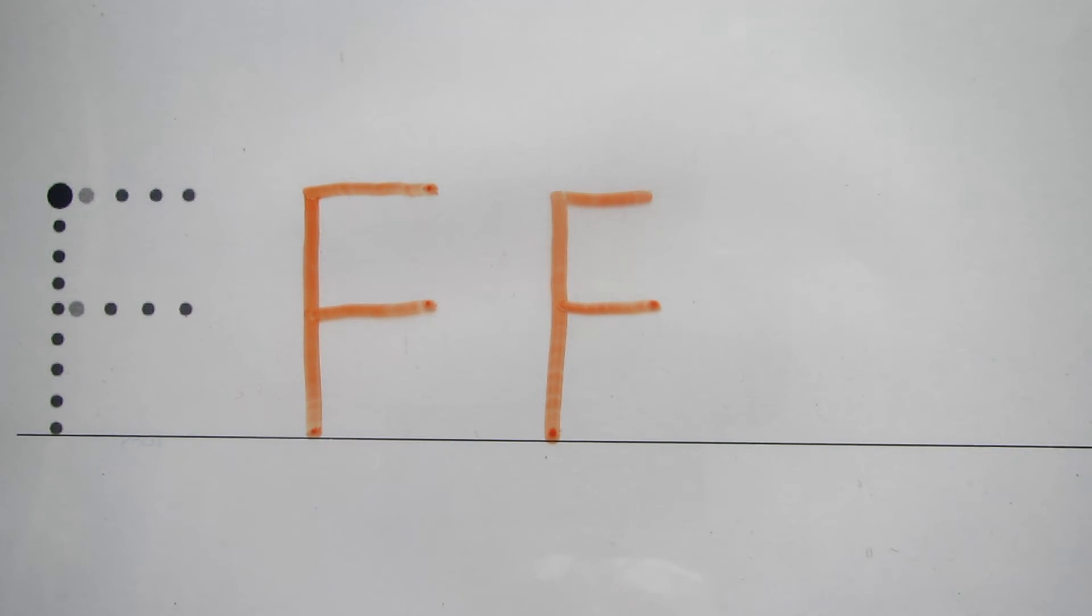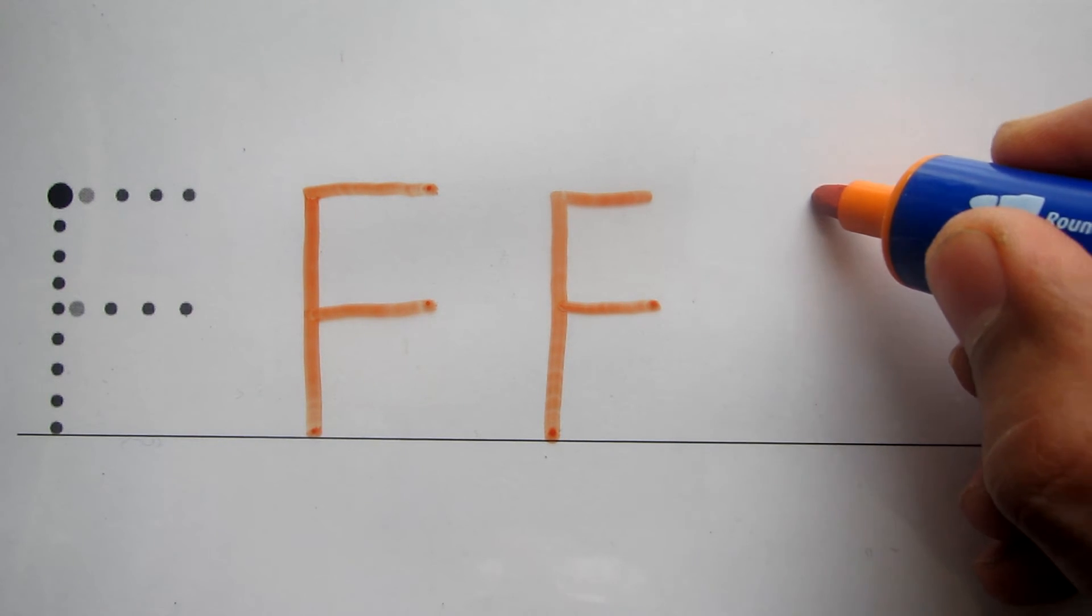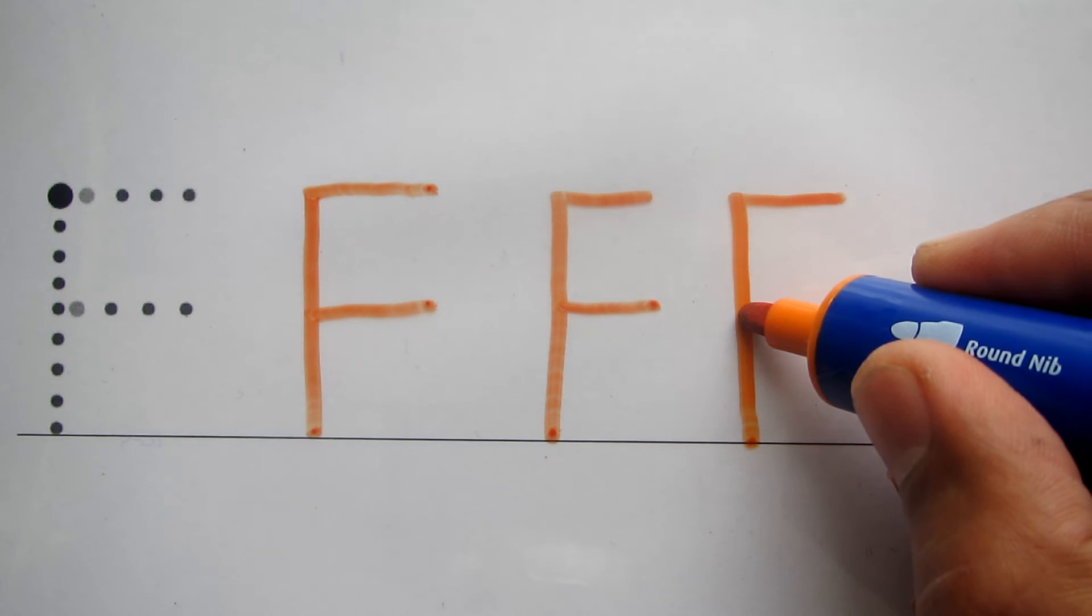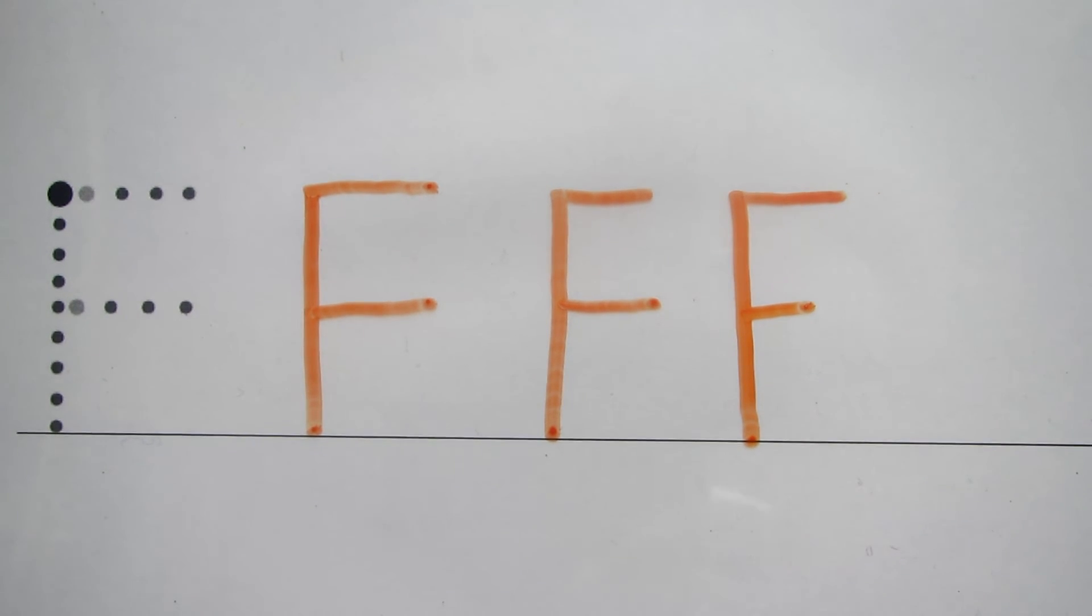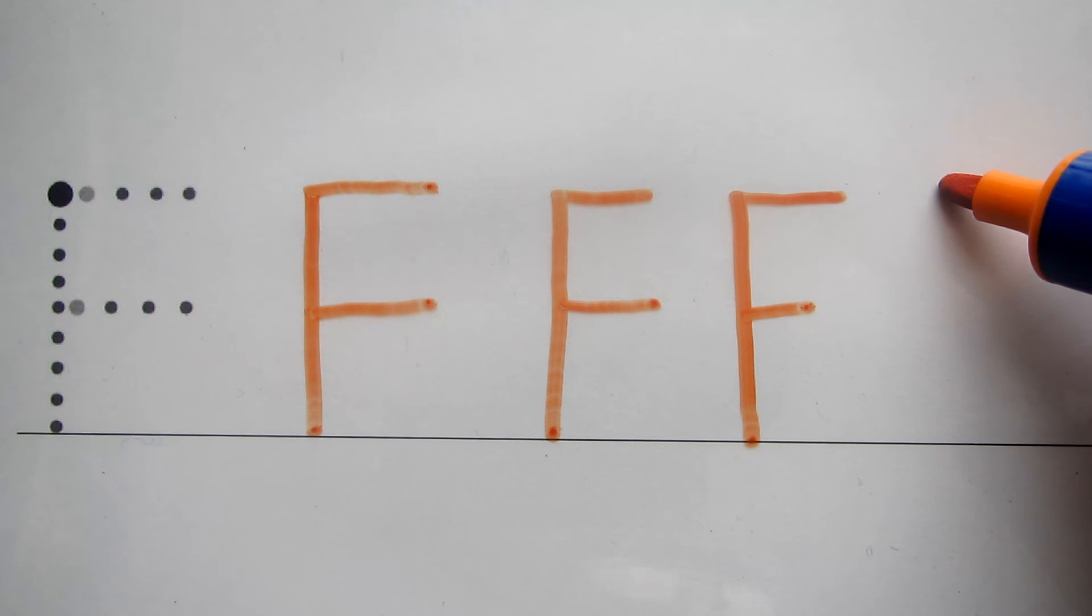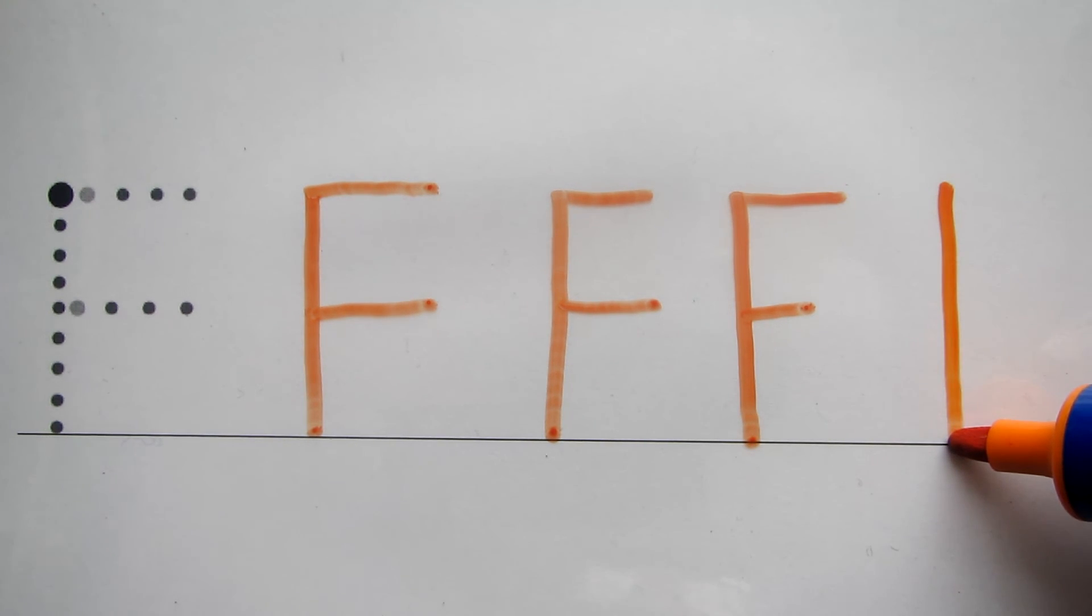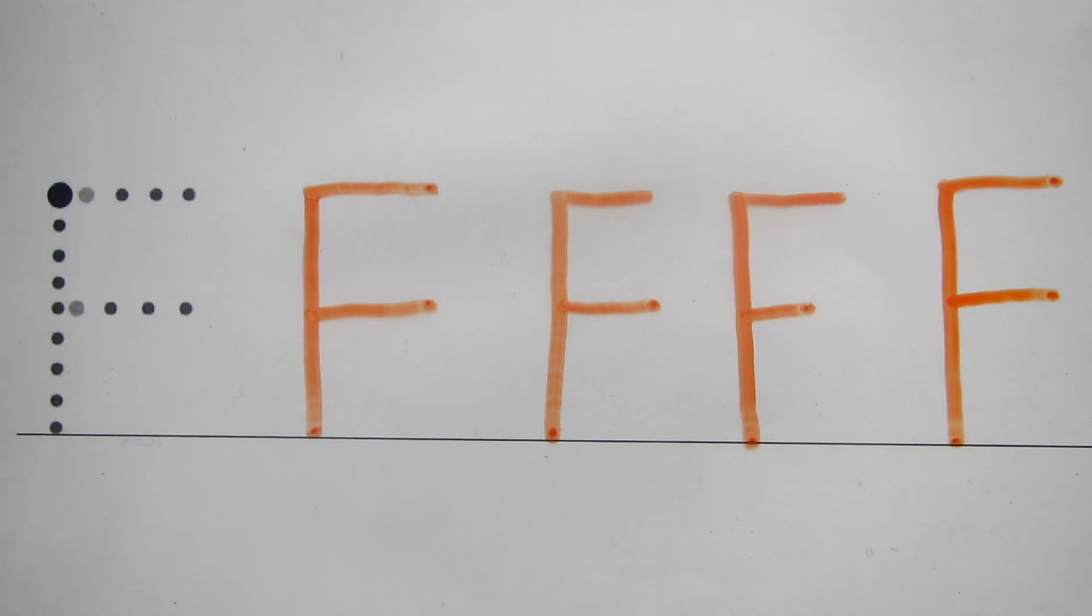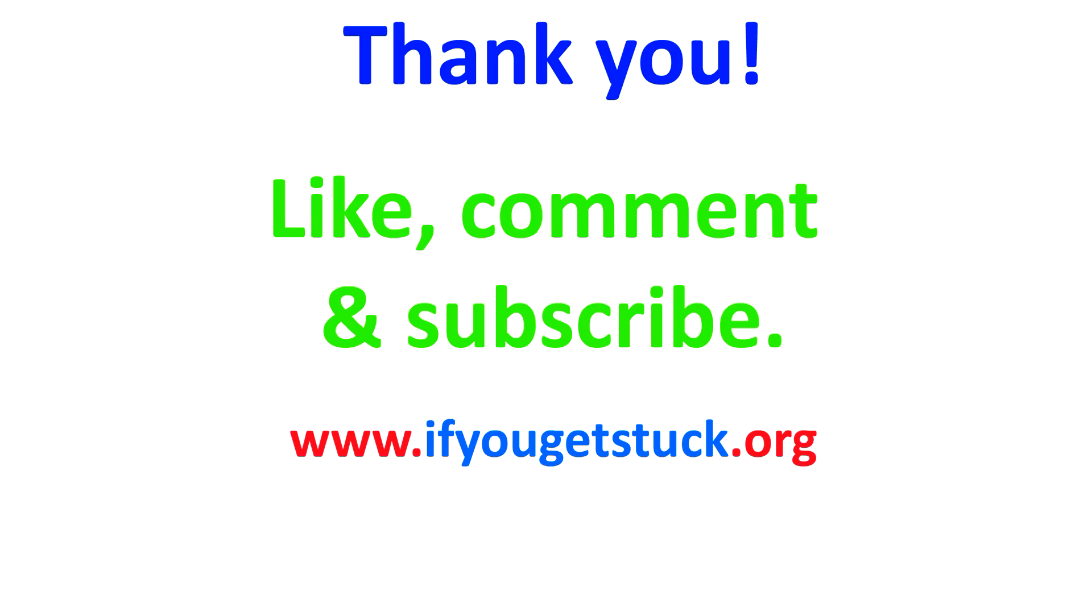You will also see people do this. All the way across and down. And they will shorten this stroke. Again, it's for style. The capital F. Down to the line. Across. Across. The capital F.